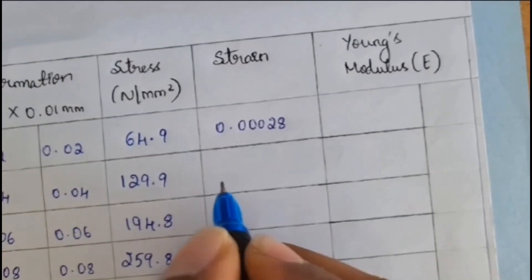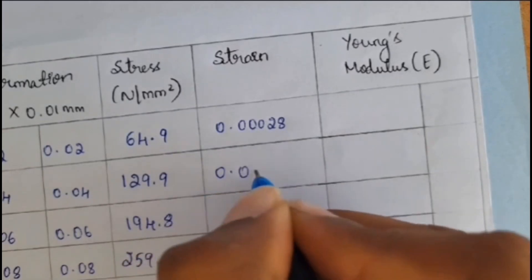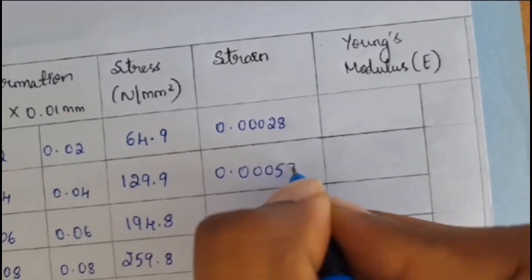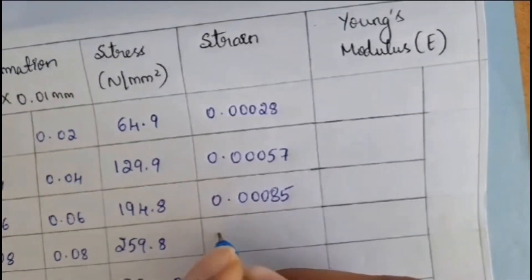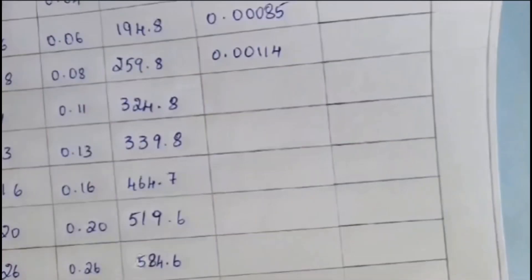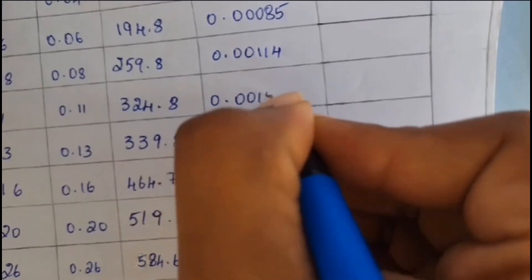For again, same thing like that only. For second reading, we will be making as... We will be considering 0.04 divided by 70. That we will be getting as 0.00057. For third reading, 0.06 divided by 70. We will be getting 0.00085. For fourth reading, 0.08 divided by 70. 0.00114. So for like that, same reading I will be doing. I will be getting 0.00157.